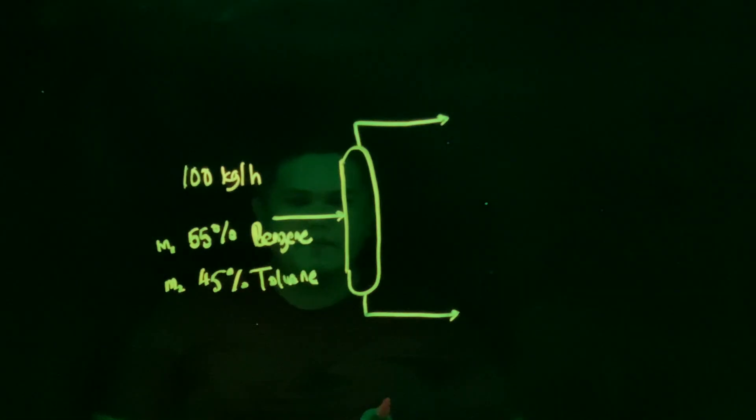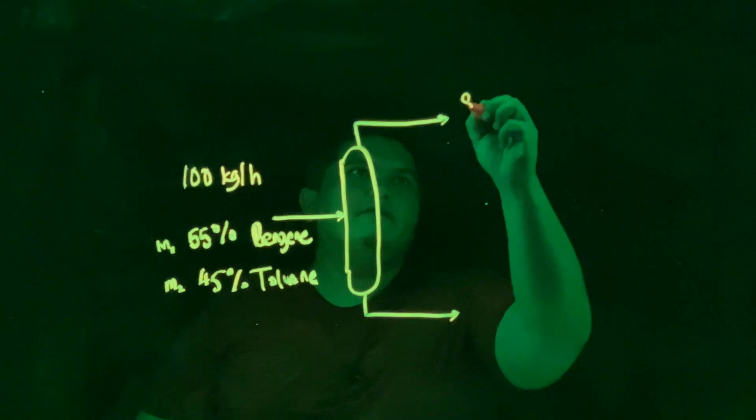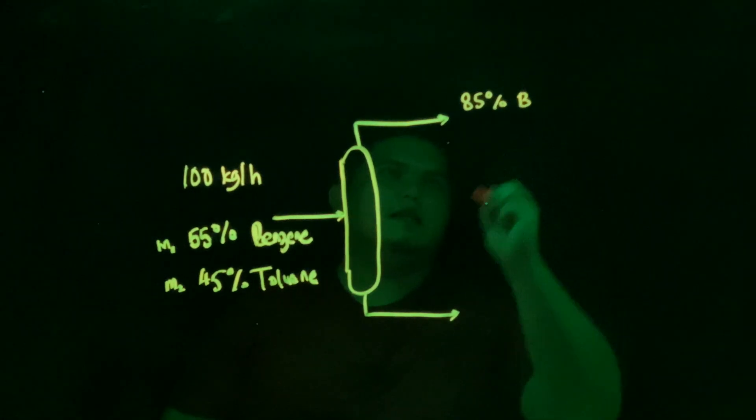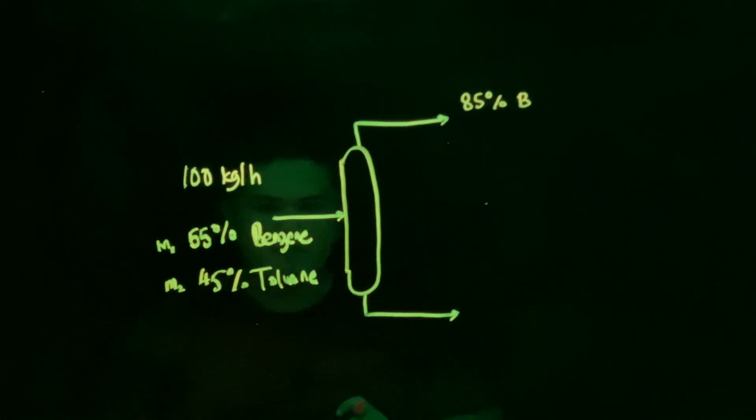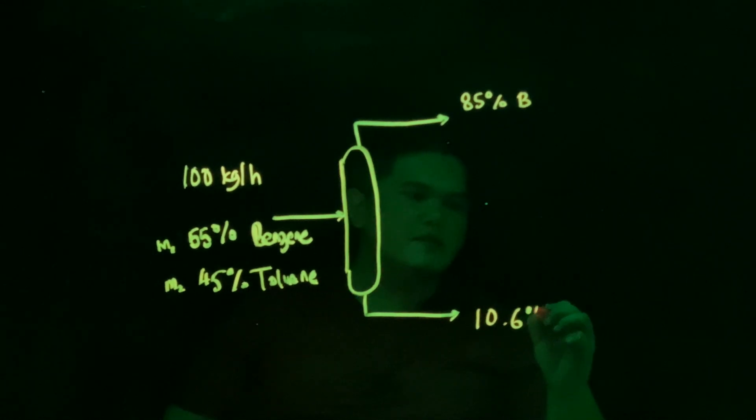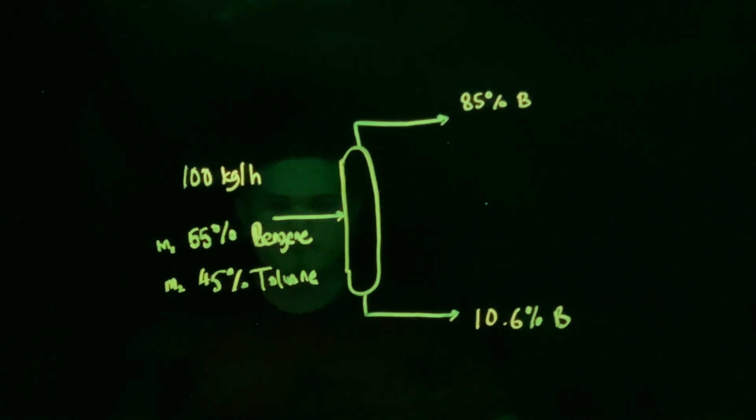The top stream contains 85 percent benzene at the top, and then another one contains 10.6 percent benzene by mass at the bottom.